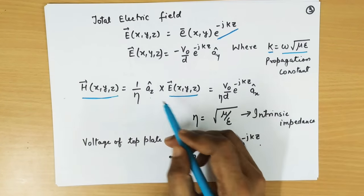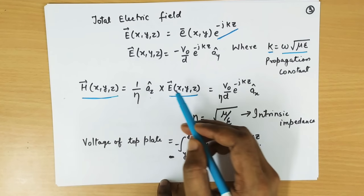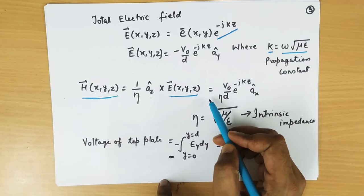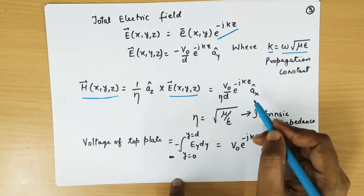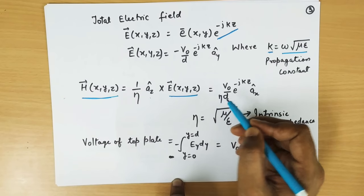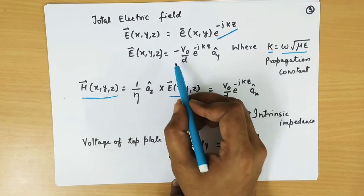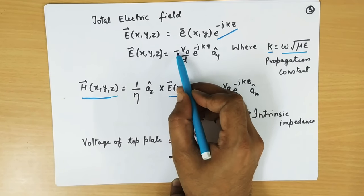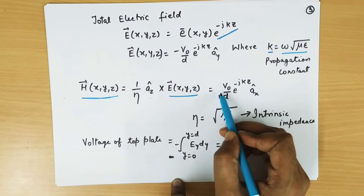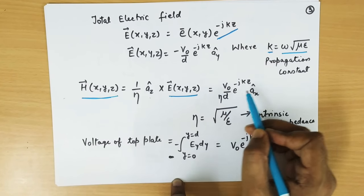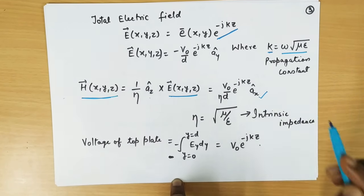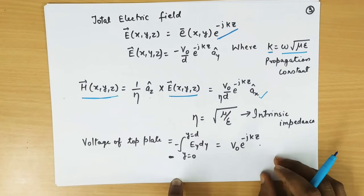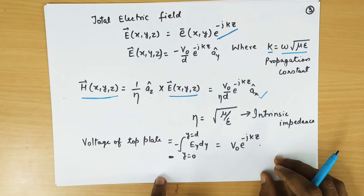So we get H(x,y,z), the total magnetic field, as V0 over (eta times D) times e to the power minus jkz in the a_x direction. Taking a_z cross a_y gives minus x, and since there is already a negative sign, minus times minus becomes positive. So we get this expression for the total magnetic field.